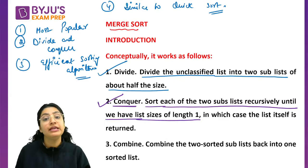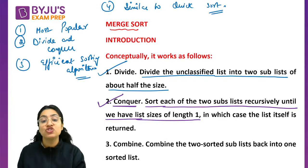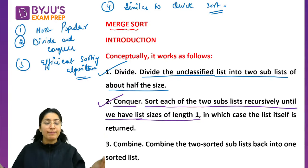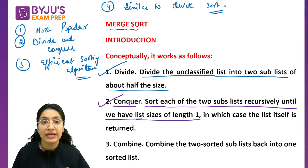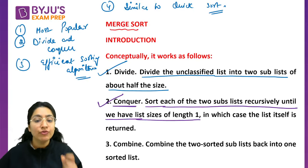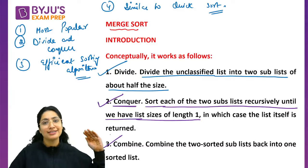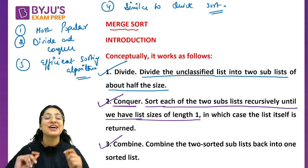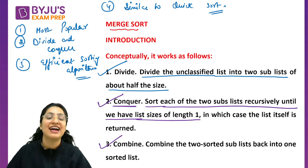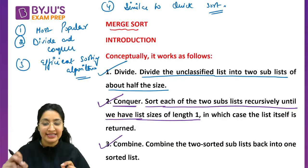Finally when you have two sublists, you merge them and a final data in sorted form will be available to you. Let's understand this with the help of an example.